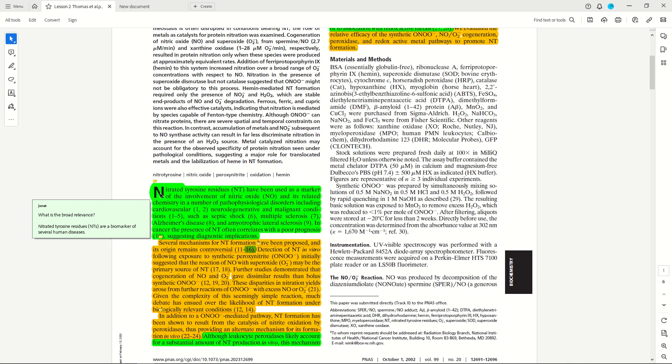This says nitrated tyrosine residues have been used as a marker for the involvement of nitric oxide and its related chemistry in a number of pathophysiological disorders. This starts to list a number of different human diseases such as neurodegeneration, multiple sclerosis, Alzheimer's, septic shock, and so on.